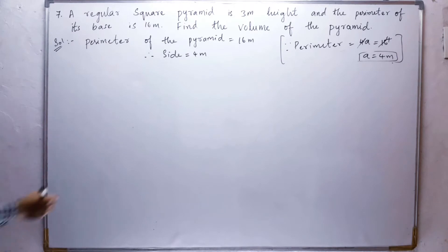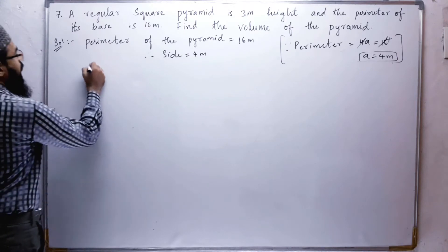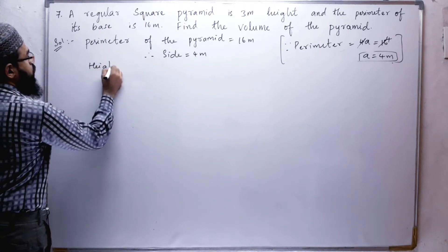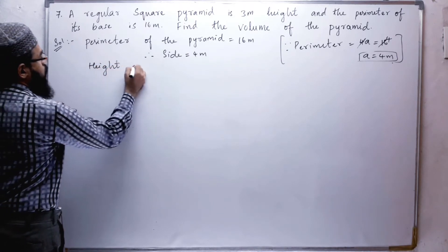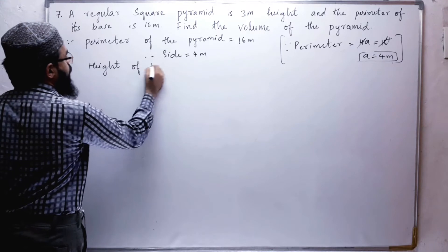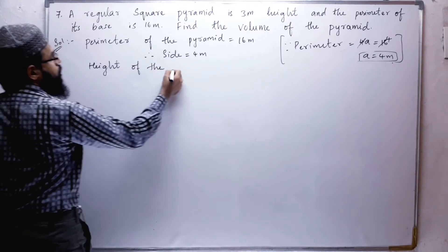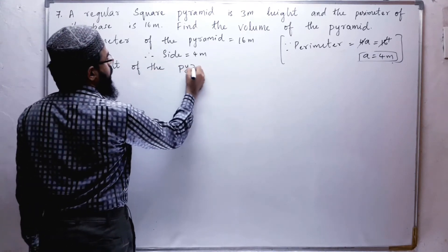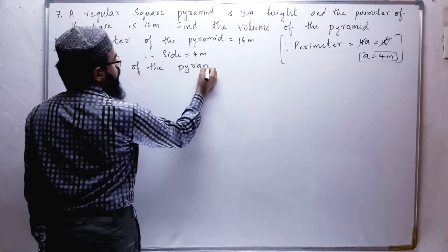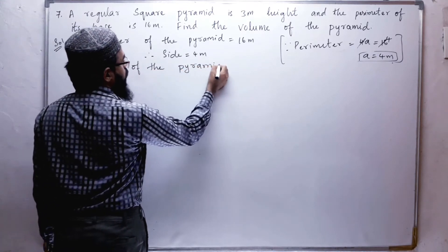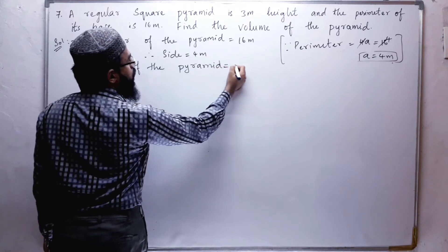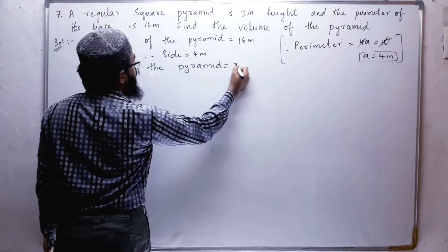Next, they have given the height. The height of the pyramid is 3 meters.